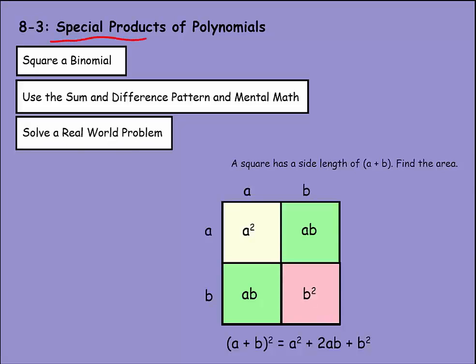One of the special products we'll be looking at today is squaring a polynomial. If a square has a side length of a plus b and we need to find the area in terms of a and b, remember to find the area of a square we multiply length times width, and since those are the same, it's essentially squaring it — so we would do (a + b) squared.